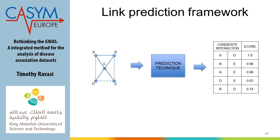How link prediction works: very simply, you have a network, you ask the predictor what is the probability of an interaction between, say, A and D or B and D, and then you rank the predictions from highest to lowest probability. Any prediction technique gives you a ranked list — candidate interactions with some kind of score.